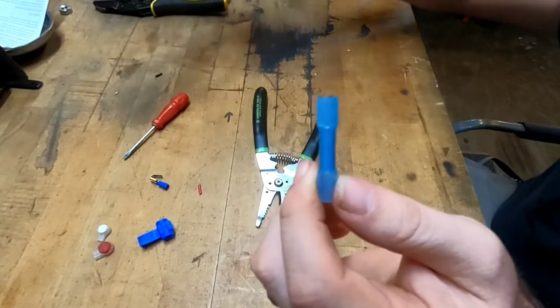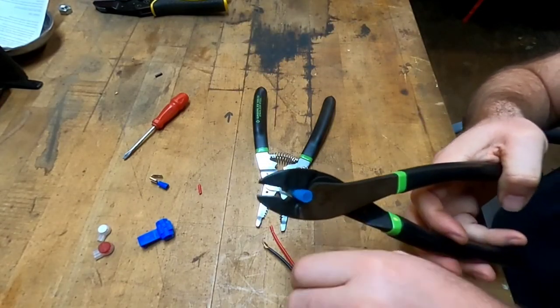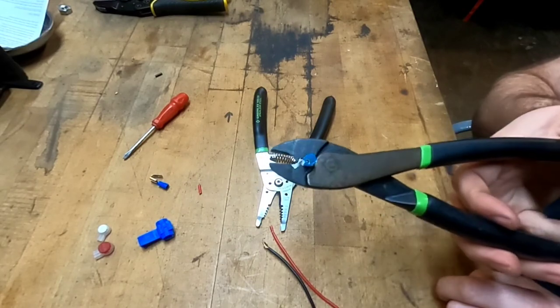And if you don't have the insulated crimpers, you can use these crimpers that have a slot for the insulated portion, which is right here, right?